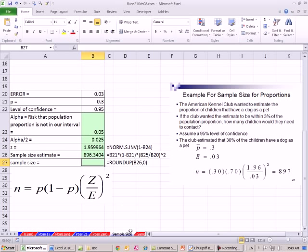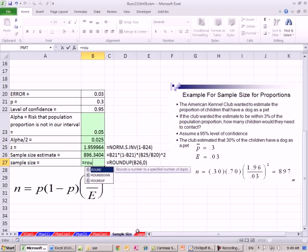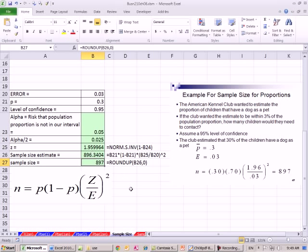896, so we'll round up. Now notice, if we were doing normal rounding, it would be 896.3, so it would go to 896. But ROUNDUP, always going to go up. You tell it to the integer with a 0, and boom. So we'll take 897, our estimate for sample size.